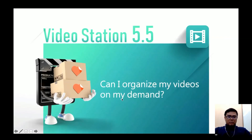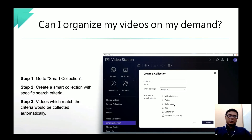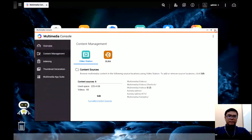If you usually tag your videos by genre or style, you can also use Video Station to organize them. Just go to Smart Collections, create a new smart collection with specific search criteria, and videos which match that criteria will be collected automatically into the smart collection. Let's see the demo for these three functions.